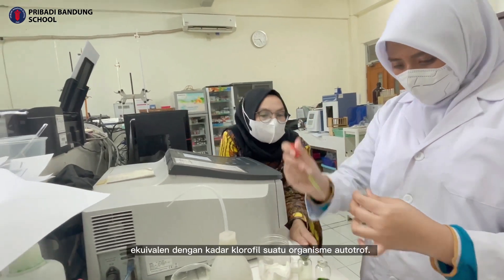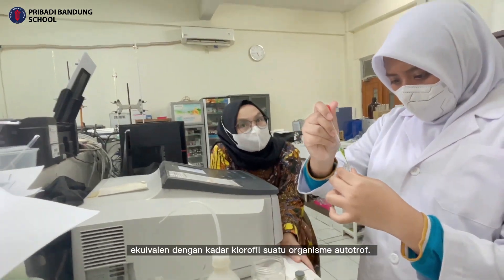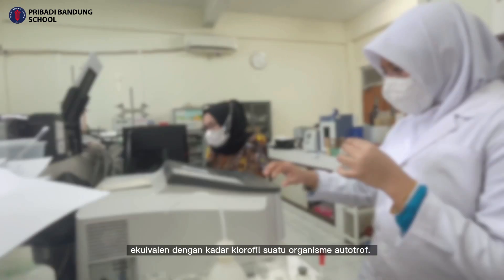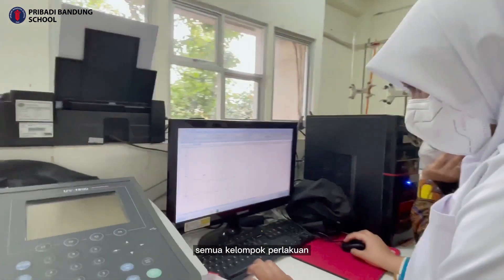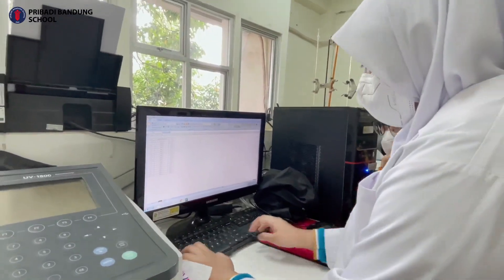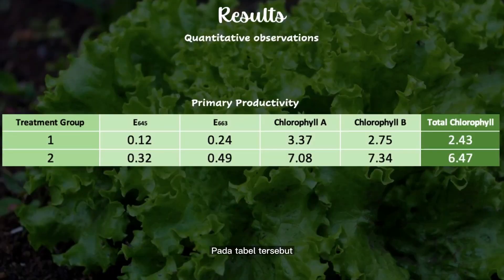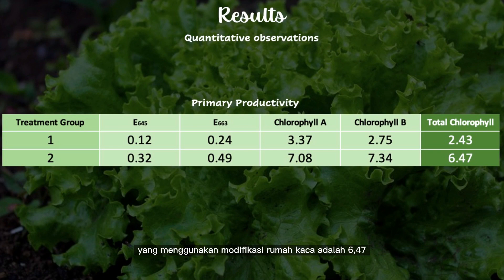The primary productivity value is equivalent to the chlorophyll content of an autotrophic organism. The following results are from calculating the chlorophyll content of all treatment groups in the second week. In this table, it is shown that the chlorophyll content on the lettuce using the modified greenhouse is 6.47, while in the control group it is only 2.43.